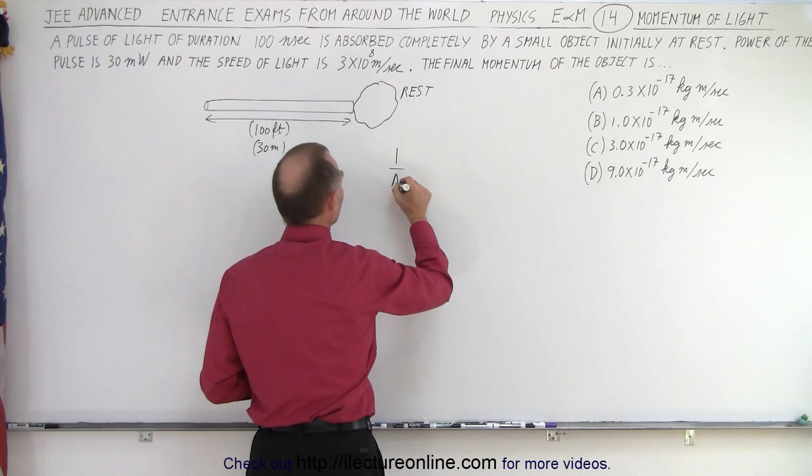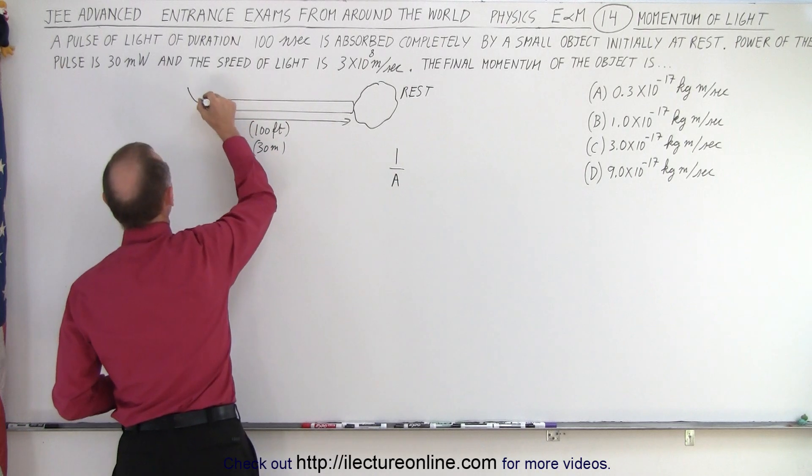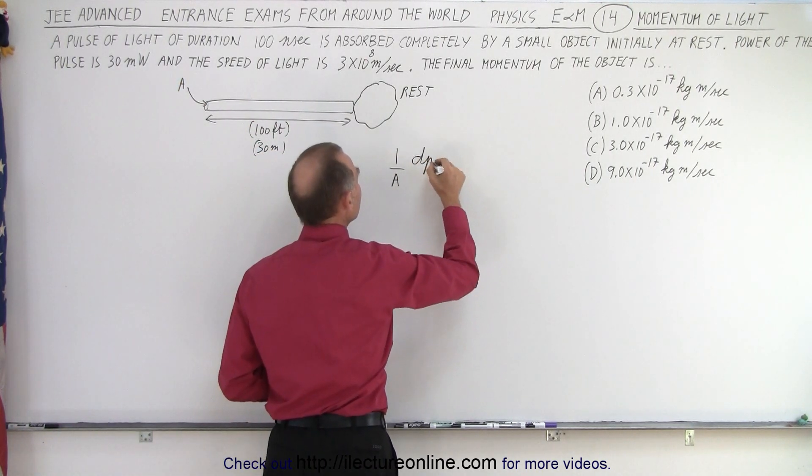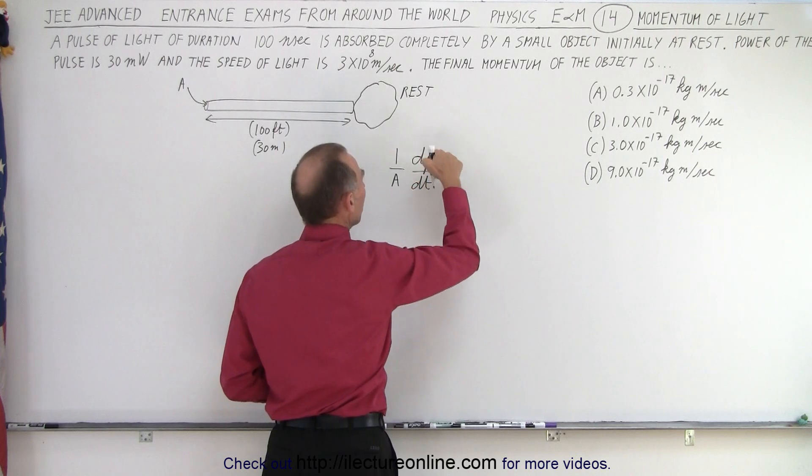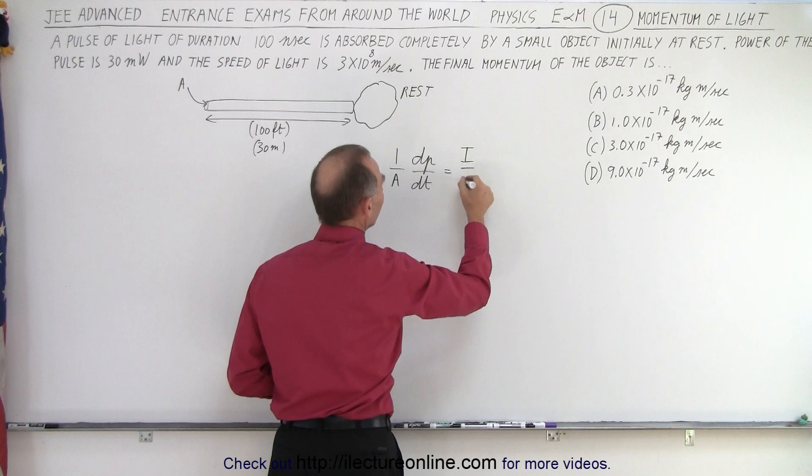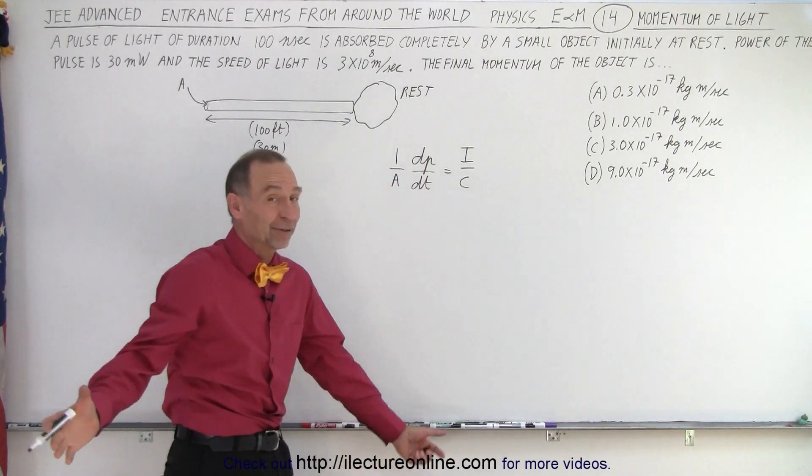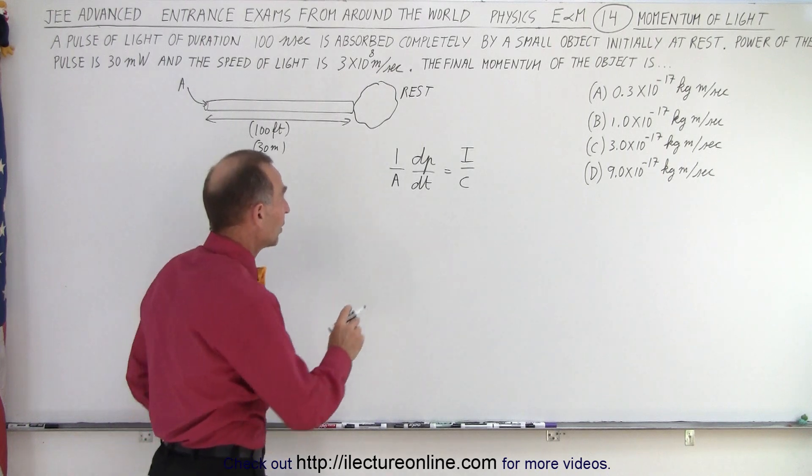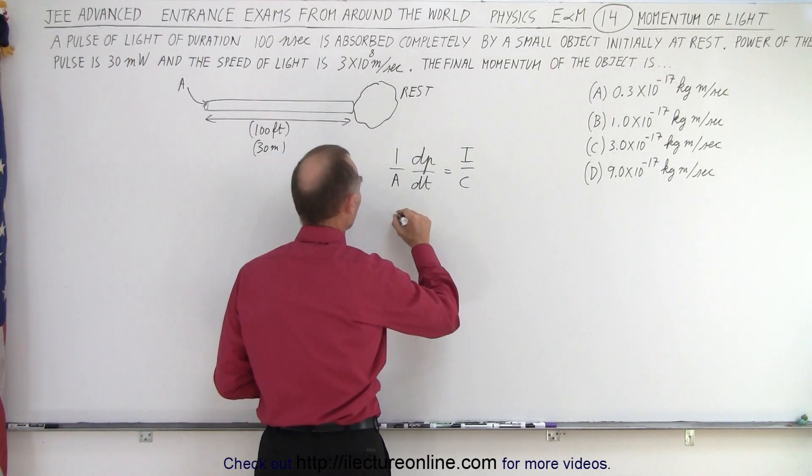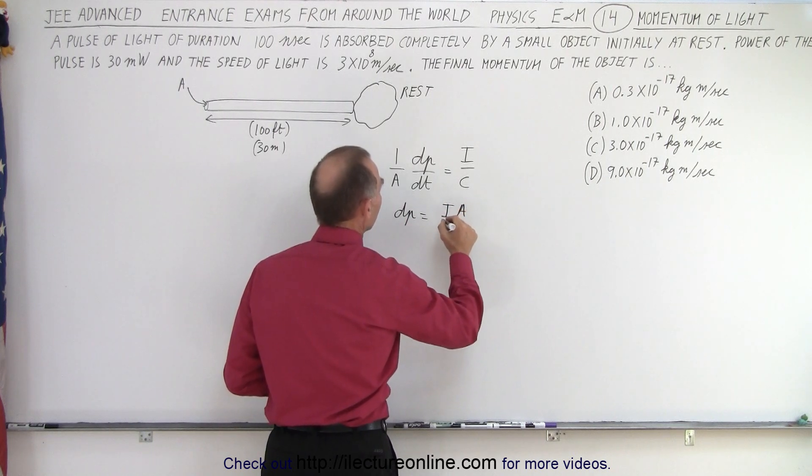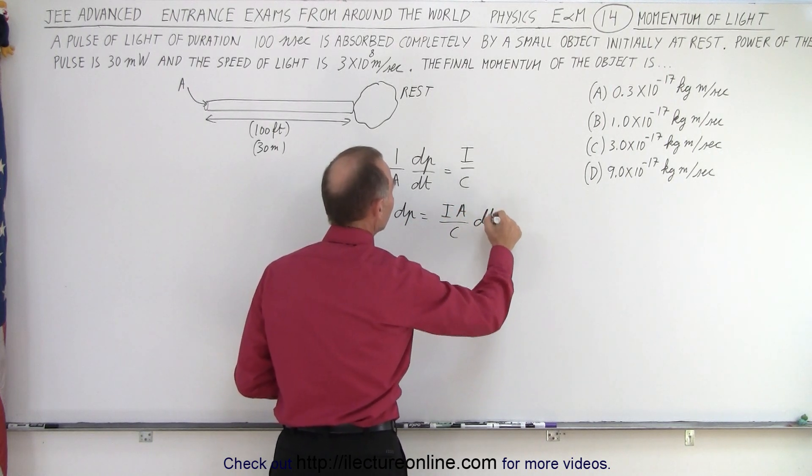It turns out that one over the area, area being the cross-sectional area of this beam, times dp/dt, the amount of momentum deposited per unit time, is equal to the intensity of the light divided by the speed of light. Again, if you don't remember that equation, you're not going to solve the problem. So what we can do here is we can write this as dp = (I × A / c) × dt.